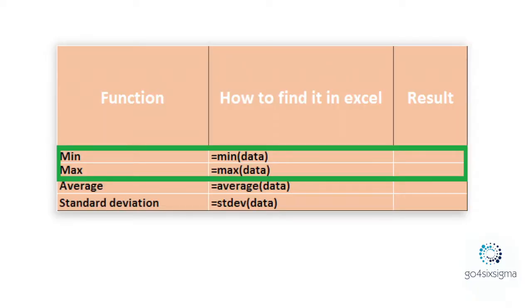Please use very simple Excel functions here. You can start with minimum and maximum: select all the data you collected and choose the minimum function in Excel, then choose the maximum value. You will see the minimum and maximum values. This is important because it gives you an understanding of the range of the process. For example, if the waiting time for pizza delivery is minimum 15 minutes and maximum two hours, it gives you specific knowledge about how the process behaves, which will be very important later in the analyze phase.